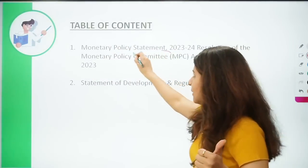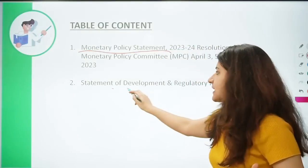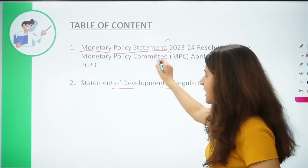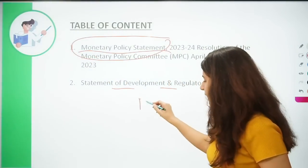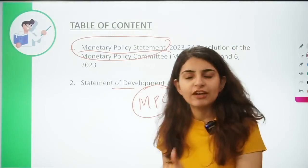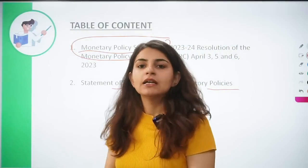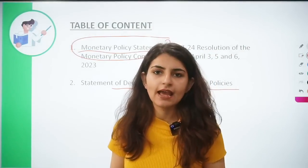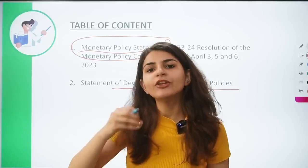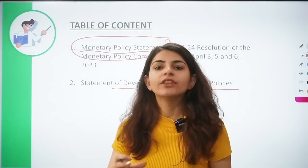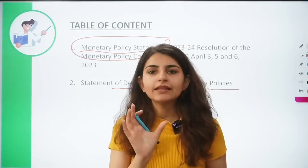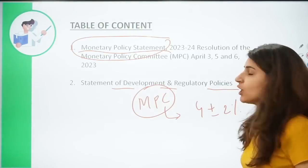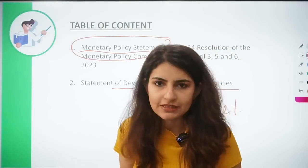The first one is the Monetary Policy Statement and the second one is the Statement of Development and Regulatory Policies. Under the first statement, the Monetary Policy Committee talks about the inflation persisting in the economy, with the objective of maintaining prices and bringing inflation within the 4 plus/minus 2% band. These are the objectives of the Monetary Policy Committee.